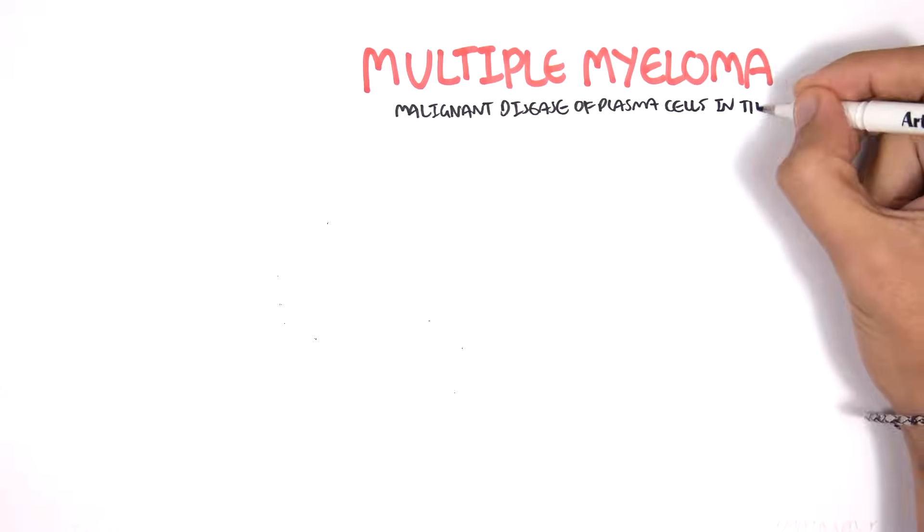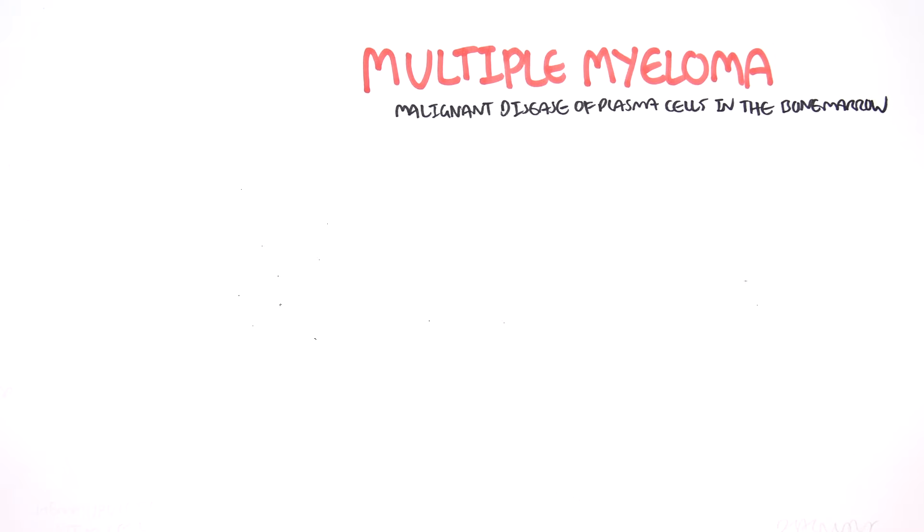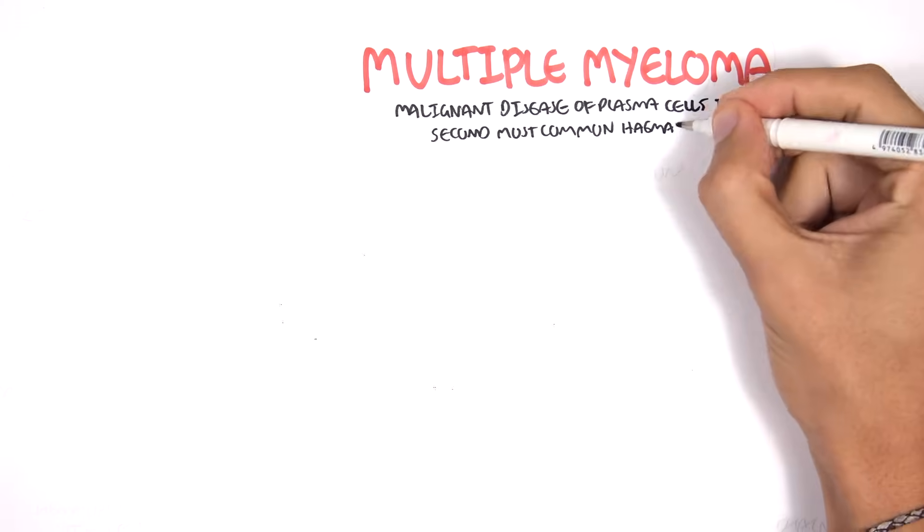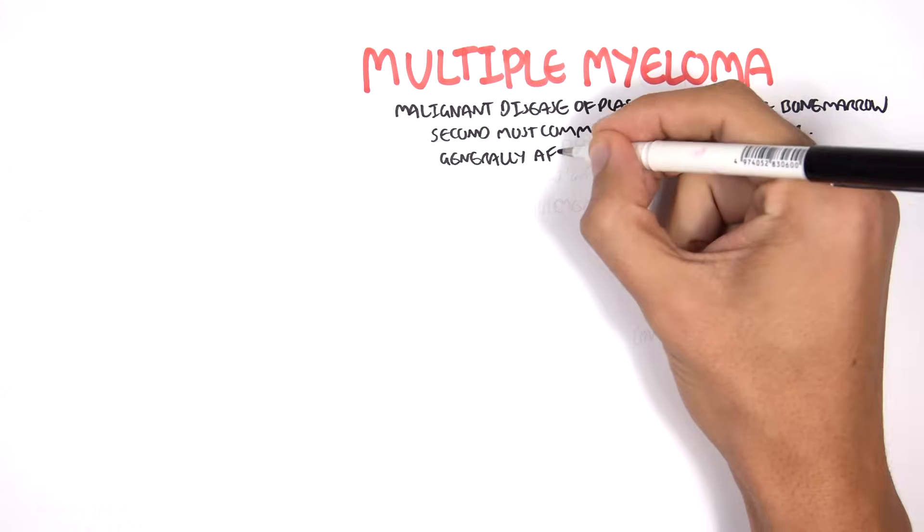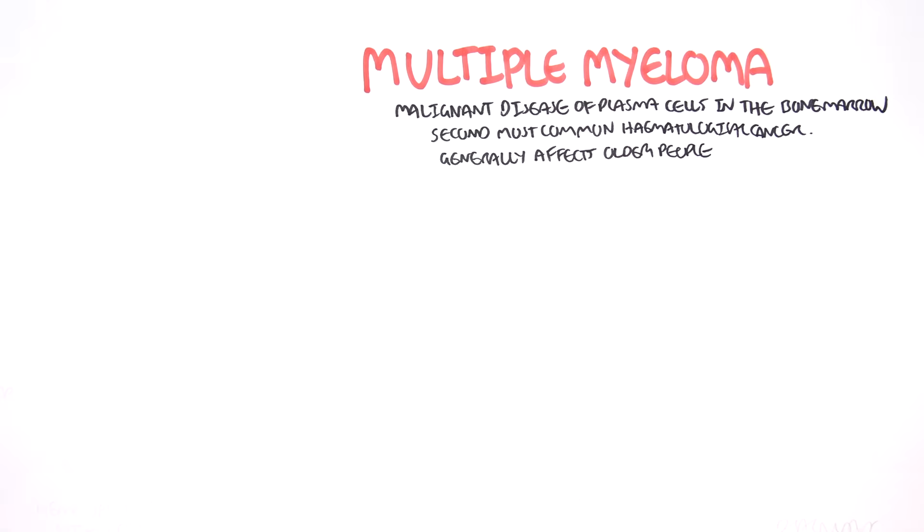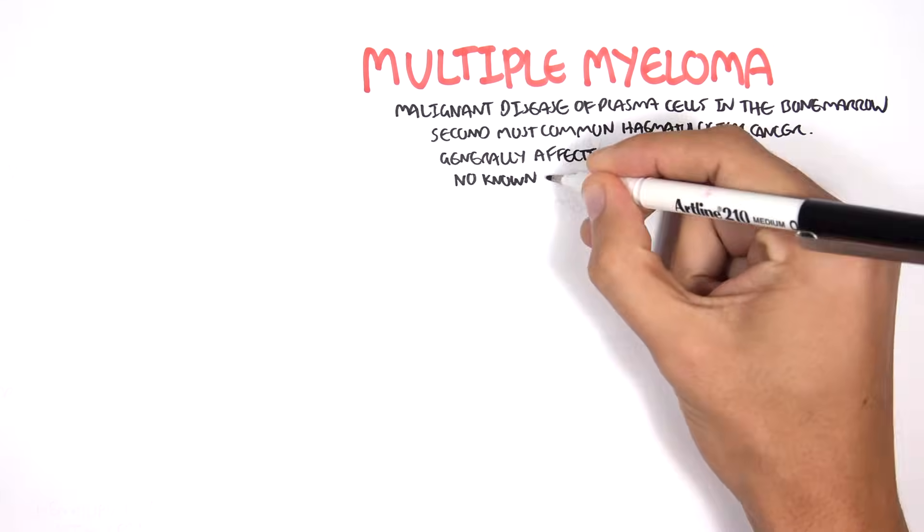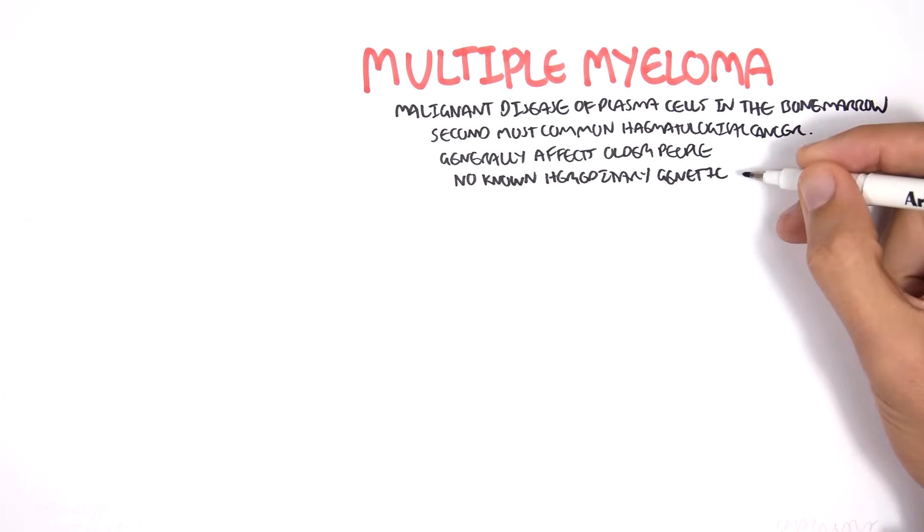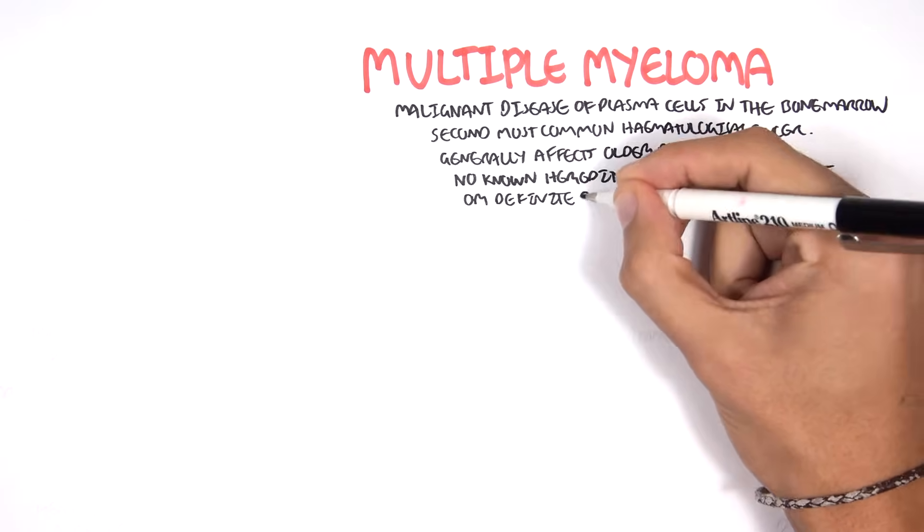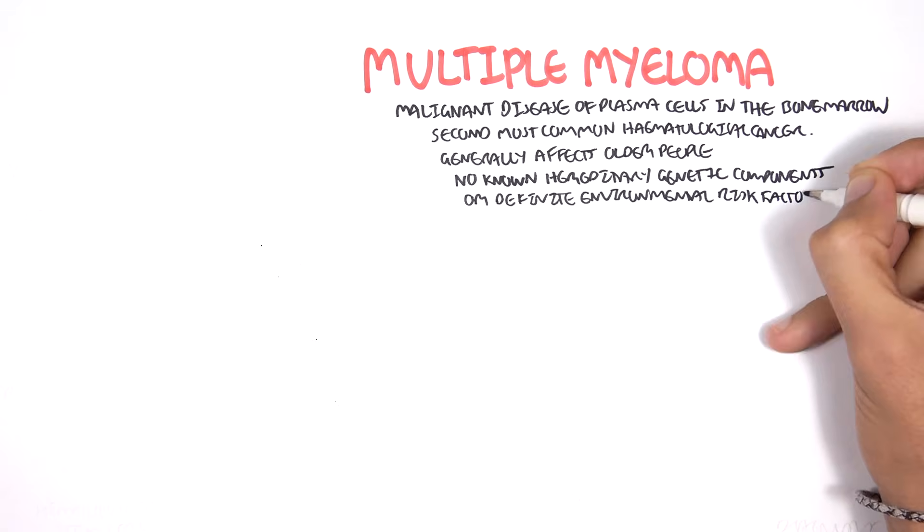Multiple myeloma is a malignant disease of plasma cells in the bone marrow. It is the second most common hematological cancer, generally affecting older people. There is no known hereditary genetic component or definitive environmental risk factors.